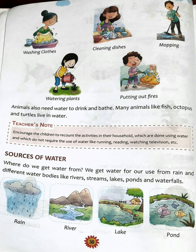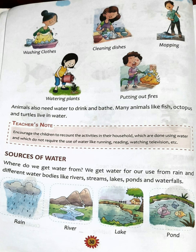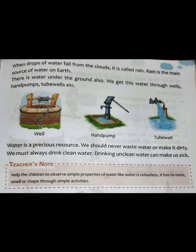All this water comes from rain and snow. Water bodies get water from rain and snow on the mountains. Snow on the mountains melts slowly when the sun comes out and then flows in the form of rivers and small streams. When drops of water fall from the clouds, it is called rain.